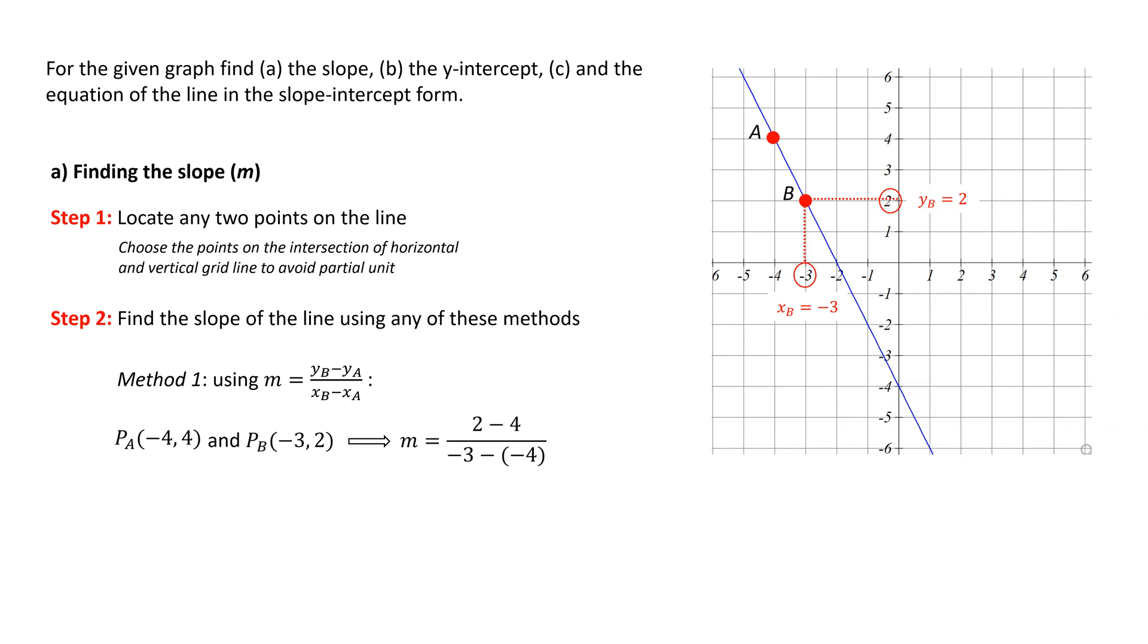Next, we will substitute the coordinates of the two points in the slope formula and evaluate. So we'll get m equals negative 2, which is the slope of the line.